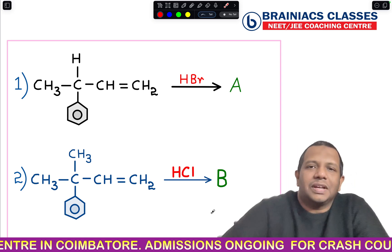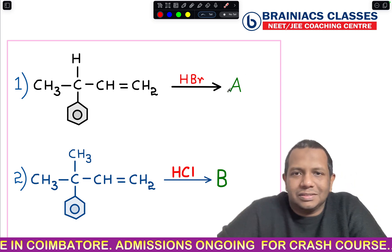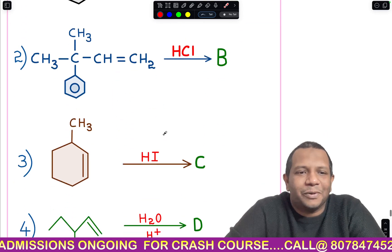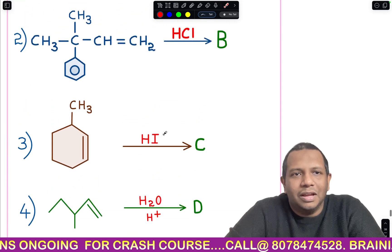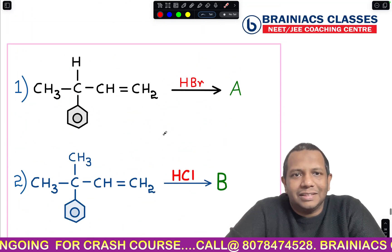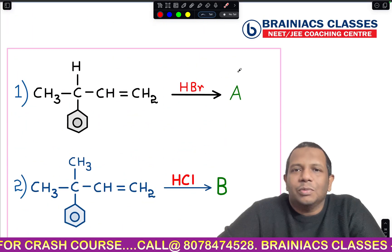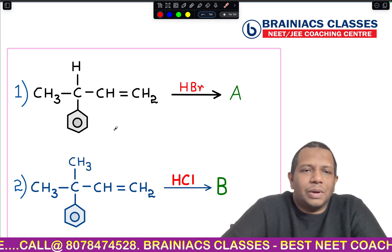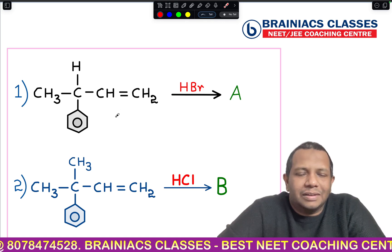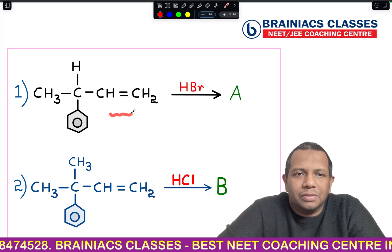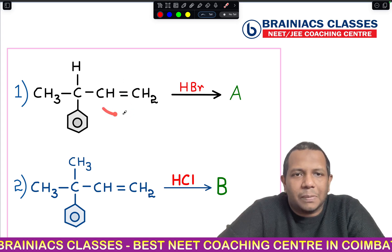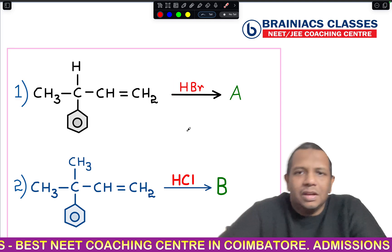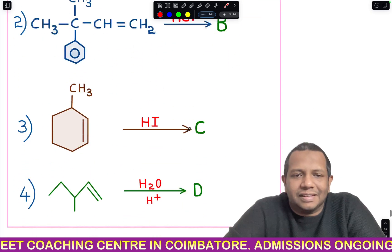Let's start with the first question. I have created four important questions that I feel are very important for this year's NEET exam. Here you can see a compound with unsaturation — a carbon-carbon double bond — and you are adding HBr. Let's see what the answer would be.